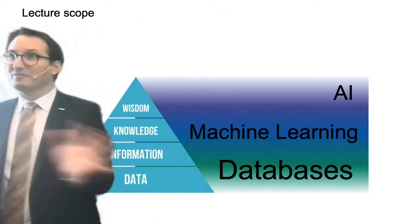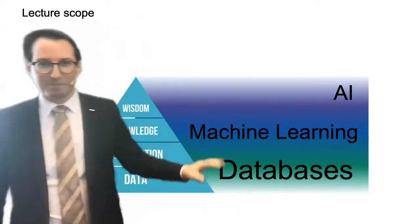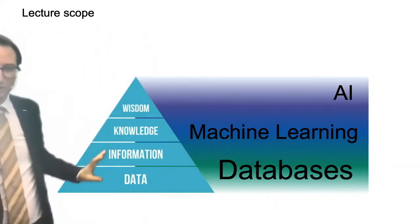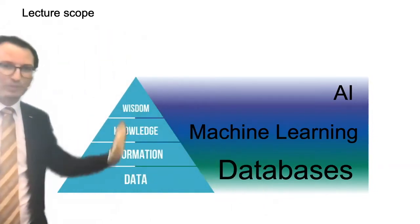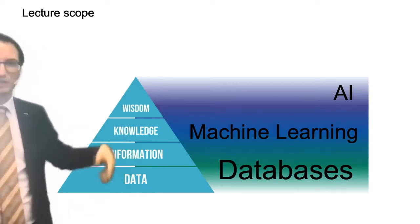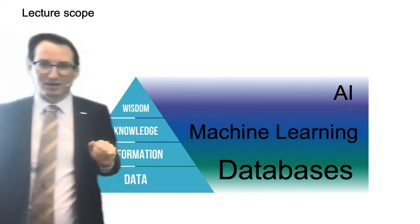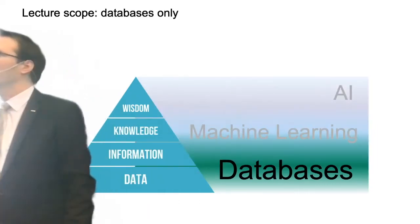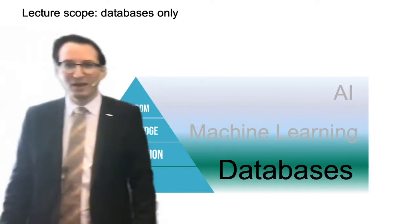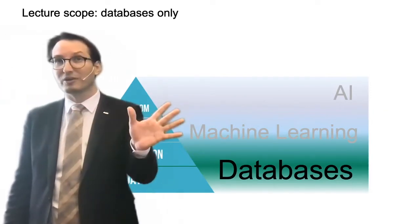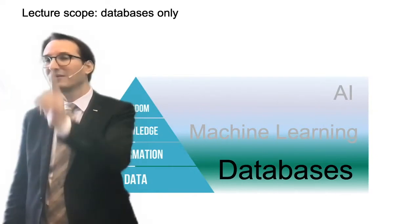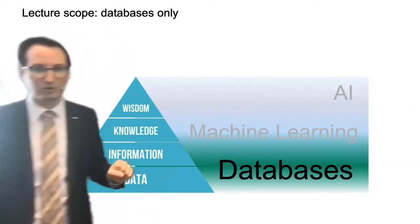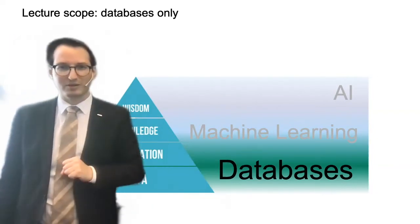So let's continue with the lecture scope. Data science is very large. One dimension for looking at it is that we have databases, machine learning, and artificial intelligence, which go up that stack with data becoming information, becoming knowledge, becoming wisdom. At the risk of disappointing you, we are not going to do any artificial intelligence or machine learning in this lecture. It connects — I showed you how with RumbleDB you can execute machine learning pipelines from the same language where you process data — but we are going to focus on databases.